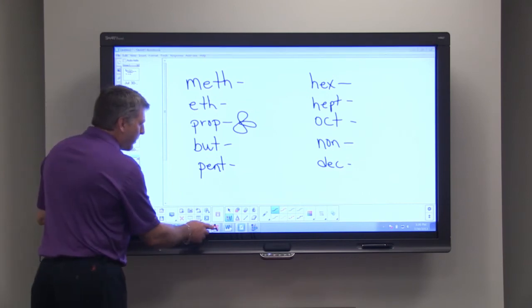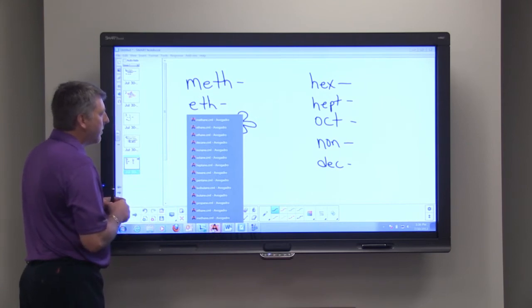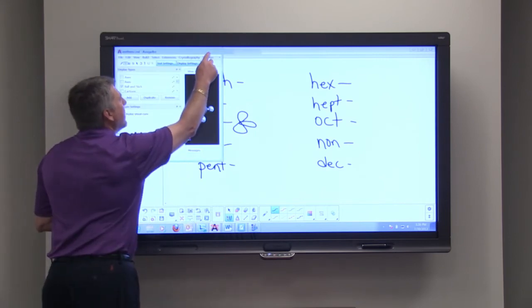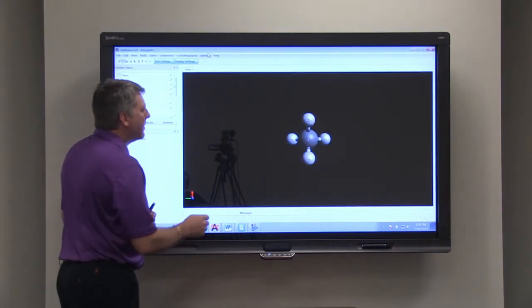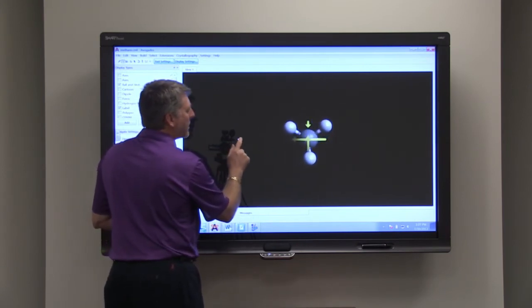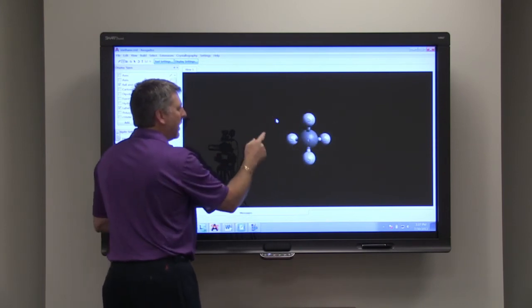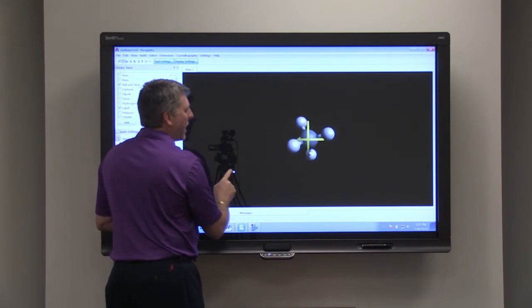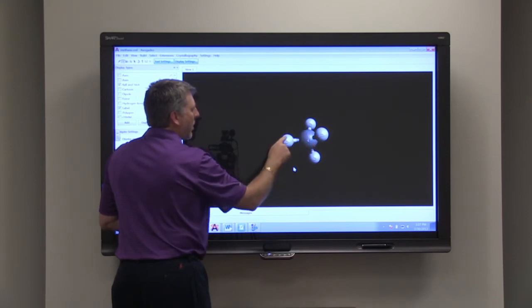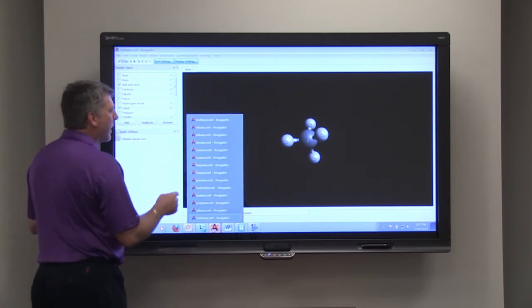So let's bring up a program that will allow us to look at some of these simple hydrocarbons. And the first one is methane, which we looked at just a second ago. But you can see what methane looks like very nicely with this program. You can see that it has what we call a tetrahedral shape with the way the hydrogens are positioned. So methane consists of one carbon and there are four hydrogens attached to it.